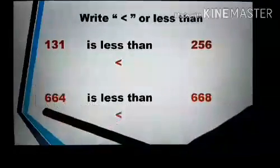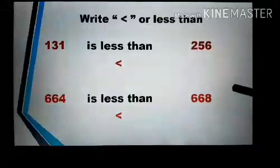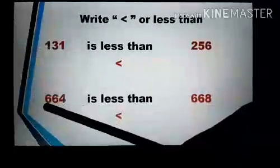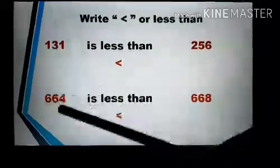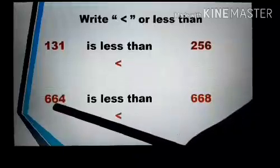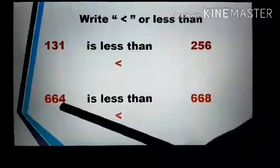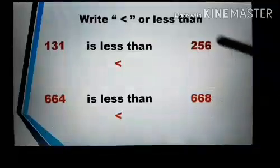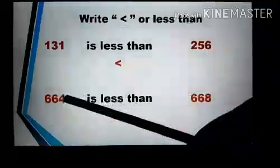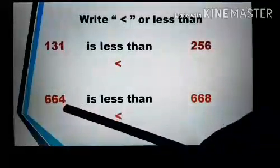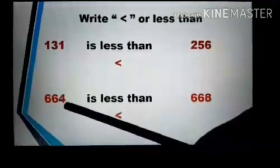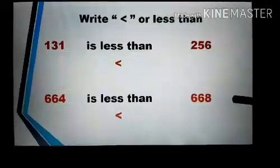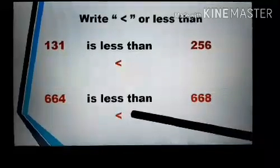Now we have 664 and 668. Compare the first digit of the numbers, which are the same. Then we will compare the second digit, which are also the same. Then we will compare the third digit: 4 and 8. 4 is smaller than 8, so the number 664 is less than 668. We use this symbol for less than.